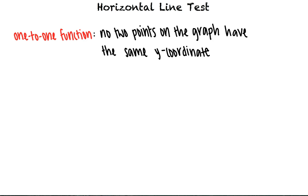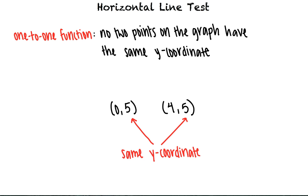For example, suppose the graph of a function contains the points (0, 5) and (4, 5). The function cannot be 1 to 1 since the y coordinate 5 is paired with more than one x coordinate, 0 and 4. We note that these two points both lie on the horizontal line y equals 5.